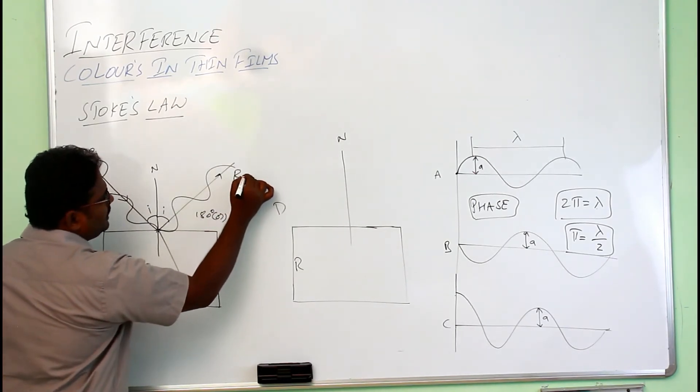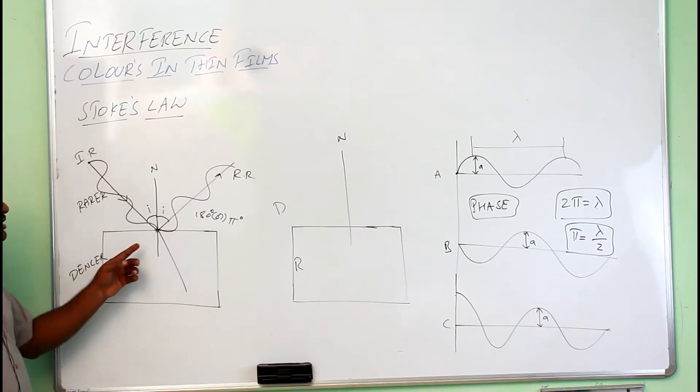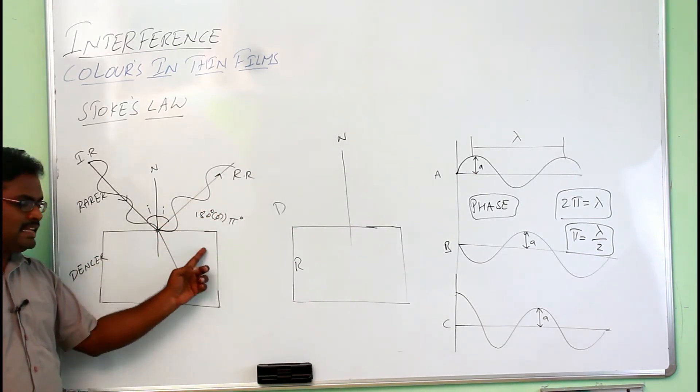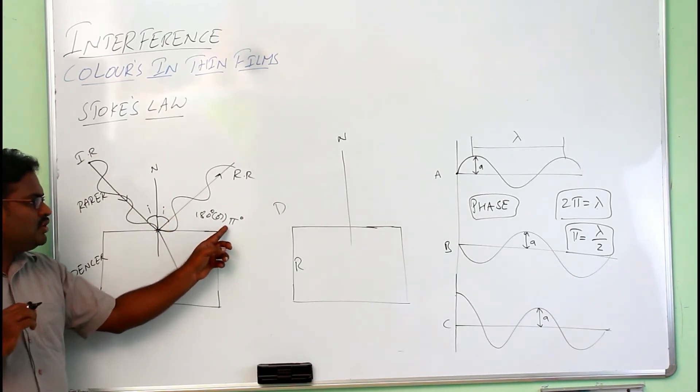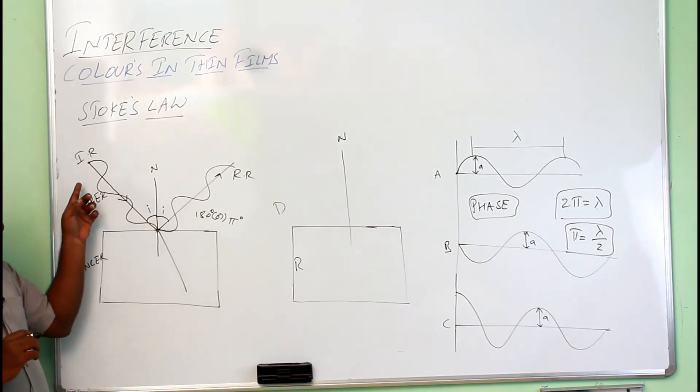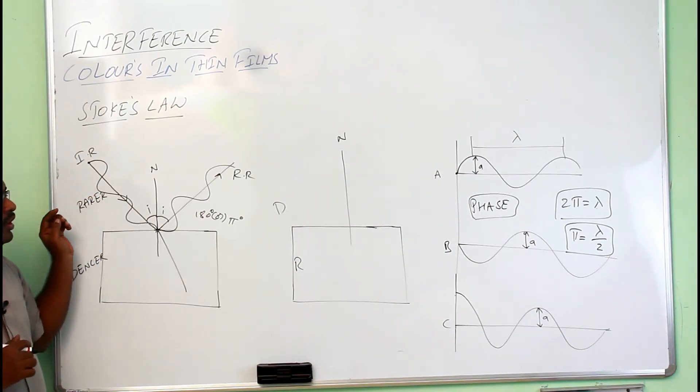This is your reflected light ray. According to Stokes law, when a light ray is reflecting from the surface of a denser medium, then the reflected light undergoes a phase change of pi degrees when compared to the incident light ray.